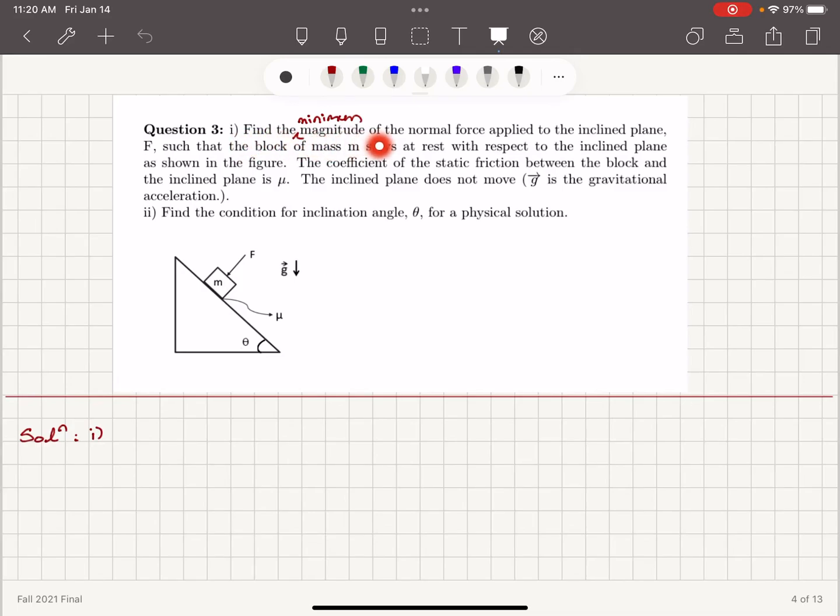Find the minimum magnitude of the normal force applied to the inclined plane F such that the block of mass M stays at rest with respect to the inclined plane as shown in the figure. The coefficient of static friction between the block and the inclined plane is mu.